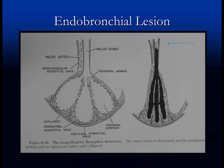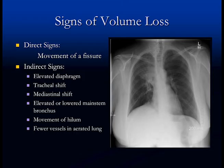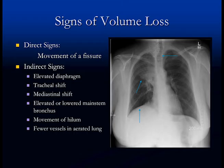There are different signs of volume loss to diagnose collapse. First, there's always consolidation — the whiteness in the lung. One direct sign of volume loss is movement of the fissure, which presents as a more or less straight line. Here the minor fissure has moved up because of collapse of the upper lobe. Indirect signs include an elevated diaphragm, higher than the other side, and tracheal or mediastinal shift towards the collapsed side. All of these are signs of volume loss.